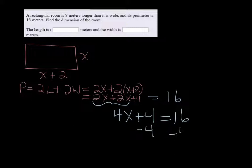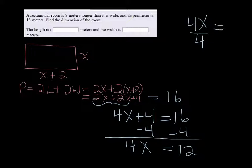Subtract the 4 on both sides, and you get 4x equals 12. Finally, when we divide both sides by 4, we get that x equals 3.